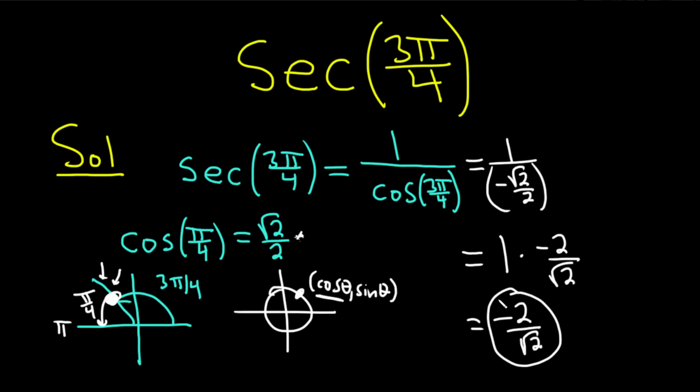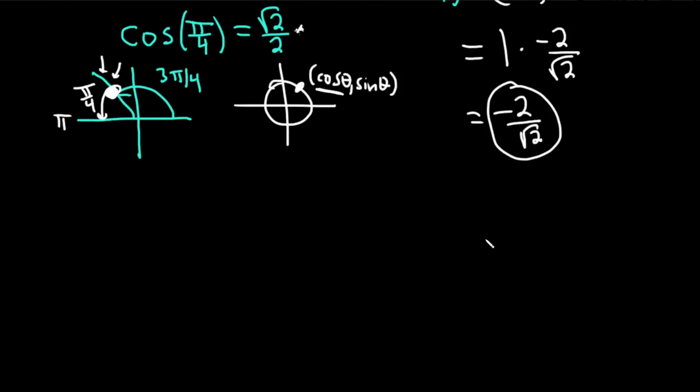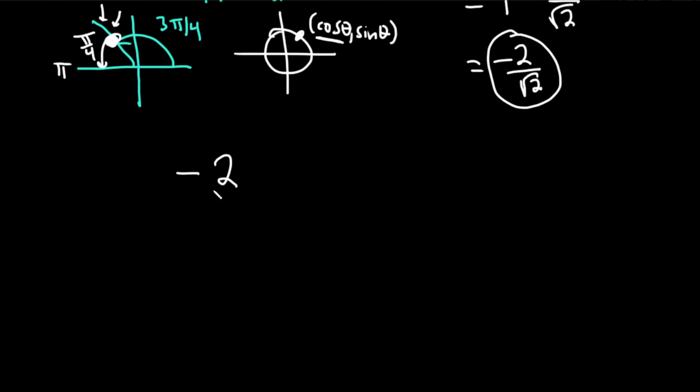And you can leave it like this, or you can rationalize. To rationalize means that you would eliminate the square root that's on the bottom. Let me just show you really quickly. So you have minus 2 over root 2. To get rid of this square root on the bottom, you just multiply by the square root of 2 over the square root of 2.